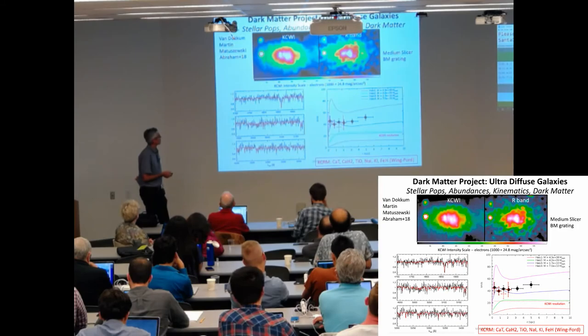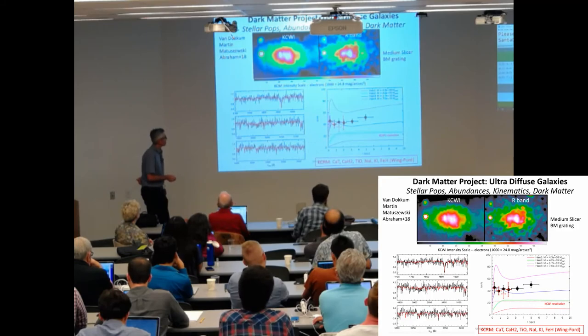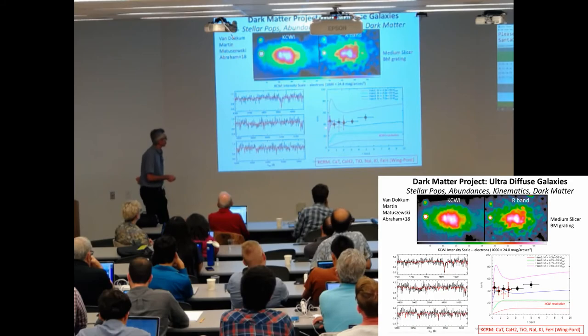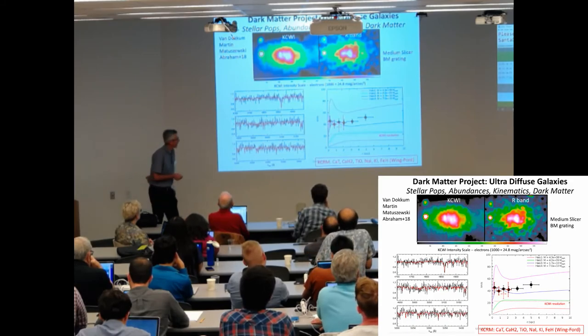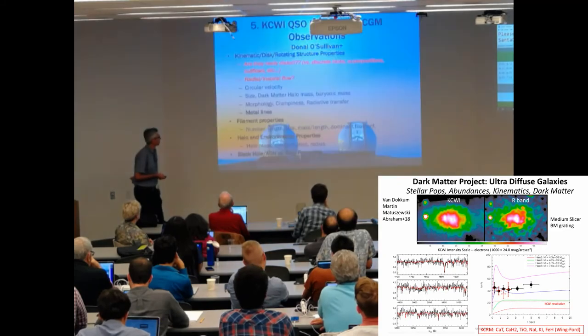Very different kind of observation. Very faint, ultra diffuse galaxy. We're actually measuring a radial velocity dispersion curve, ultimately constraining stellar pops, abundances, kinematics, and the nature of dark matter.